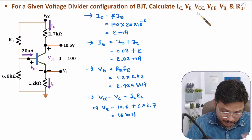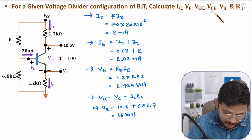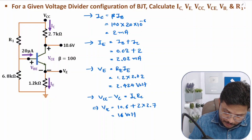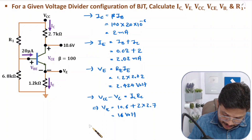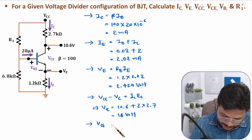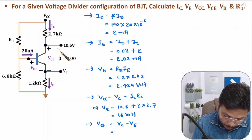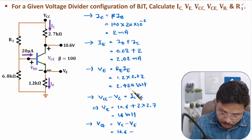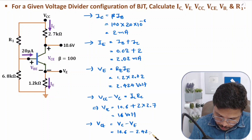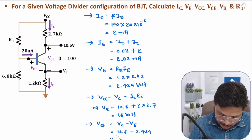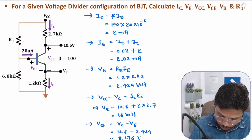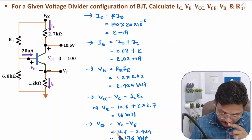Now we need to find VCE. VC and VE are both known. VE we have already calculated. VCE equals VC minus VE, which is 10.6 minus 2.424, giving 8.176 volts. Now we have VCE.